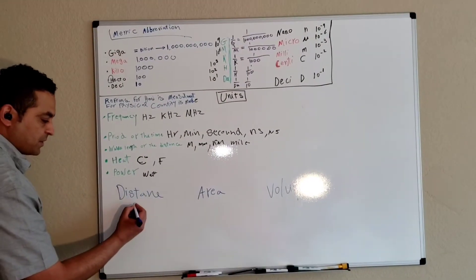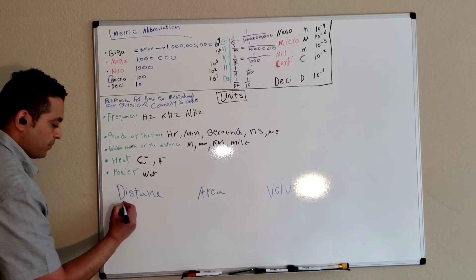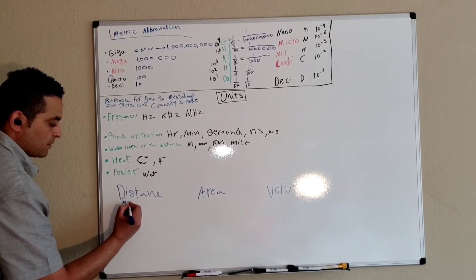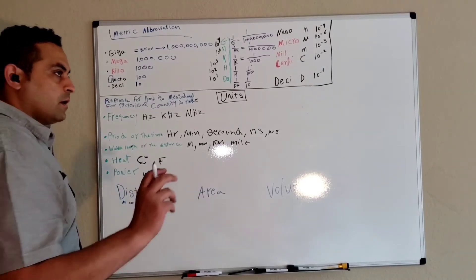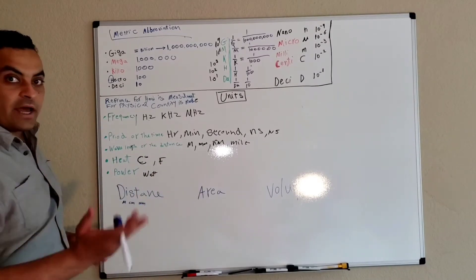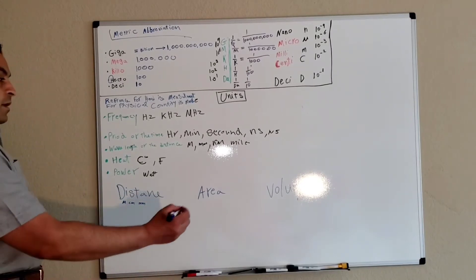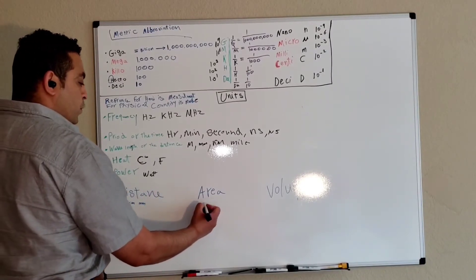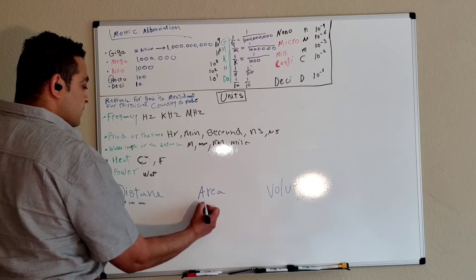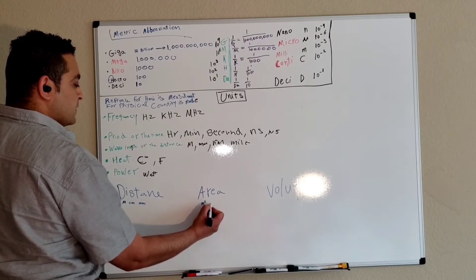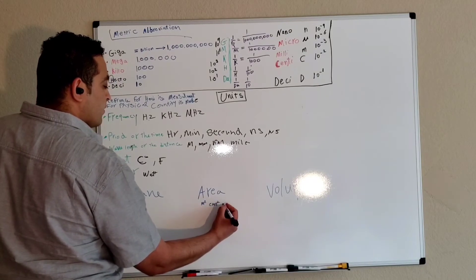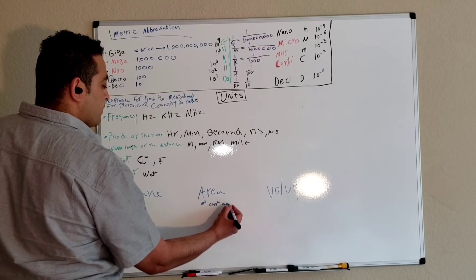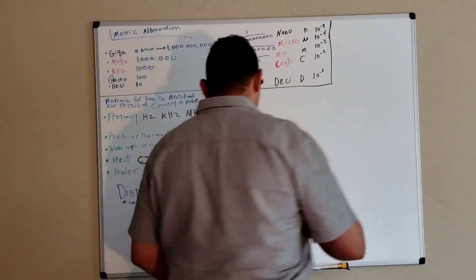For distance we use meter, centimeter, millimeter, kilometer, mile, or feet. For area we use meter squared, centimeter squared, or millimeter squared.